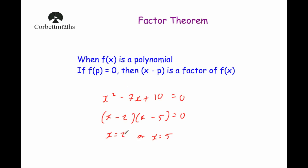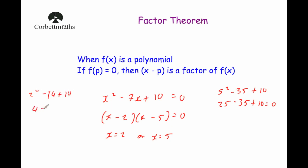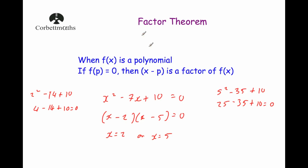Let's see how factor theorem applies. If we substitute x equals 5 into x squared minus 7x plus 10: 5 squared minus 7 times 5 plus 10 gives 25 minus 35 plus 10, which equals 0. Or substituting x equals 2: 2 squared minus 7 times 2 plus 10 gives 4 minus 14 plus 10, which equals 0. So substituting 2 or 5 gives 0, meaning x minus 2 and x minus 5 are factors. That's what factor theorem states.